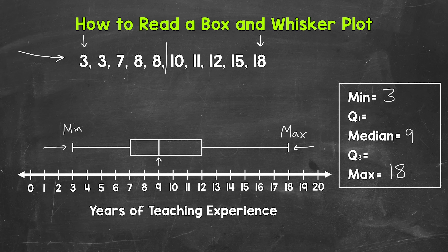For this one, we can just think that 9 is directly in between 8 and 10. But keep in mind, whenever you have two numbers and you need to find the median in between, you can take the average in order to do so. Again, the line inside the rectangle is the median — that's the halfway point within our data.